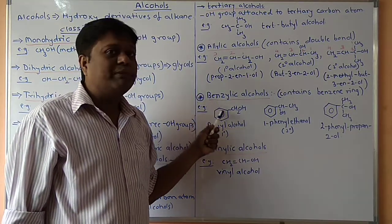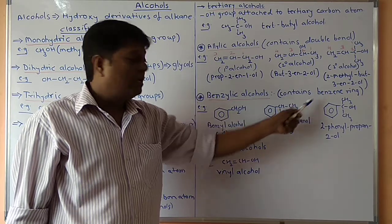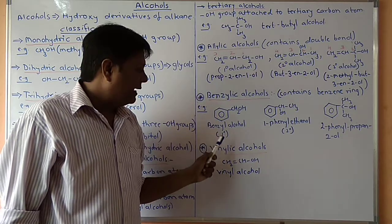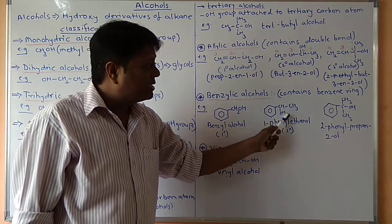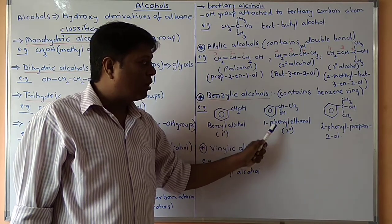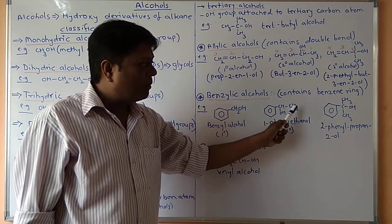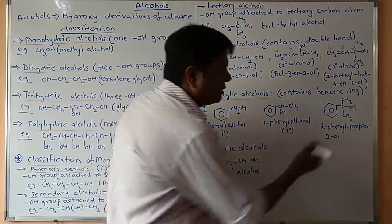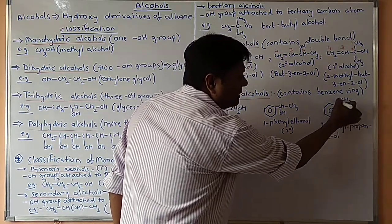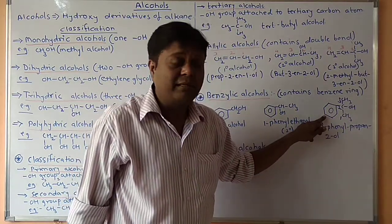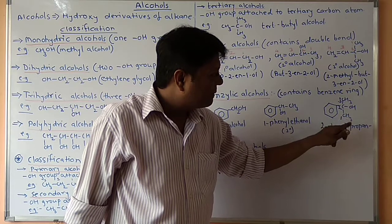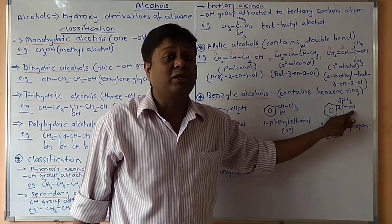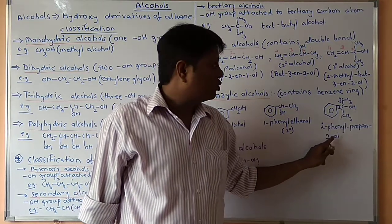Now, benzylic alcohols. Benzylic means there is a benzene ring present. If CH2OH is attached to a benzene ring, it is a primary (first-degree) benzyl alcohol. If CH(OH) is attached, it is a secondary alcohol — one phenylethanol. For tertiary, the hydroxy group is on a carbon also bearing a phenyl group and other carbons, for example where the phenyl is on the second carbon of propane at position two, giving 2-phenylpropan-2-ol.